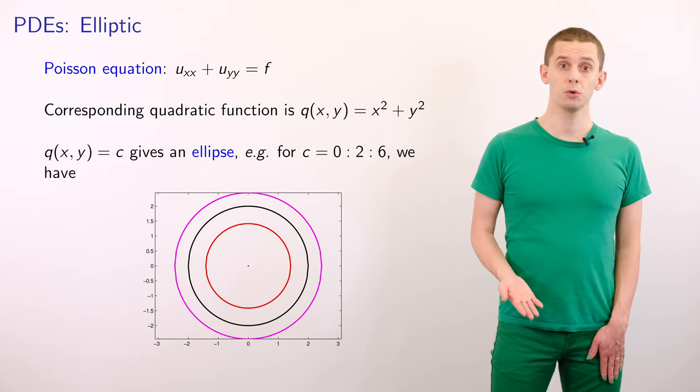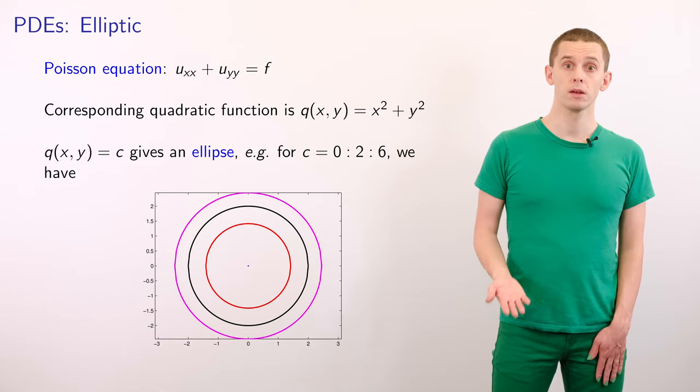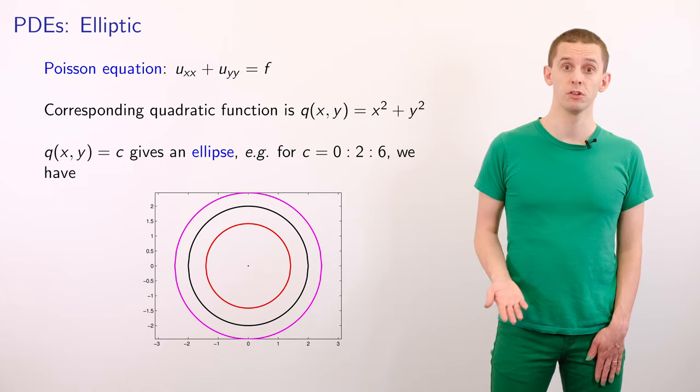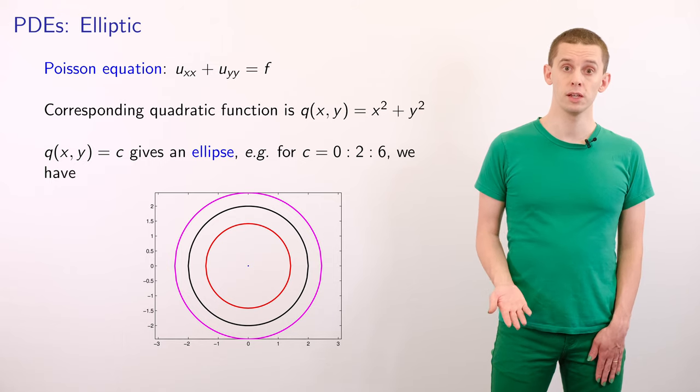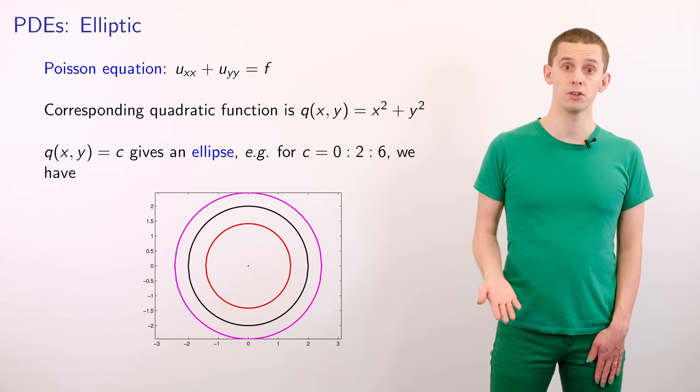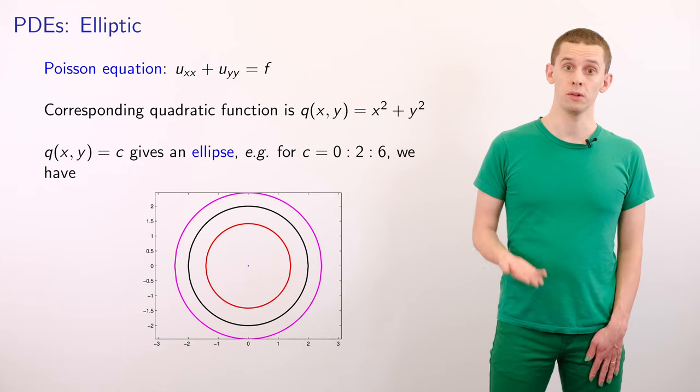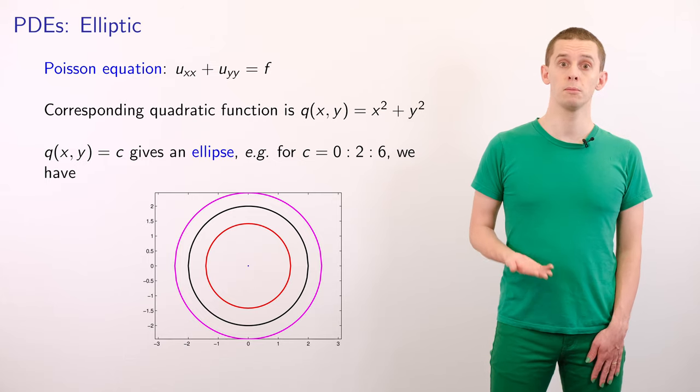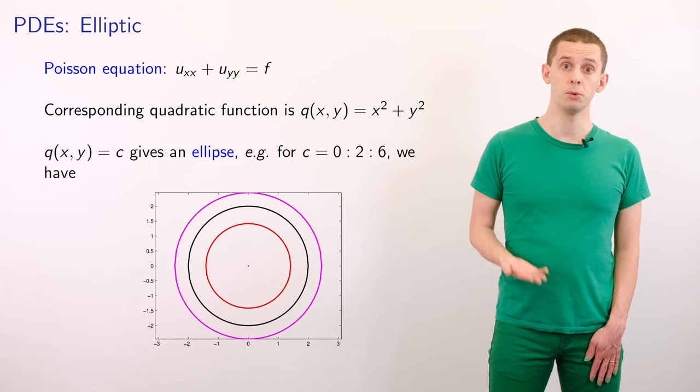Now it's worth noting that if we performed a change of variable in any of our PDEs, for example, we apply an affine transformation to our variables, then the corresponding quadratic would not change in character. If we start with ellipses, we will end with ellipses. If we start with hyperbola, we'll end with hyperbola. And therefore, these labels that we can associate to these PDEs will remain invariant even under a change of variable like this.